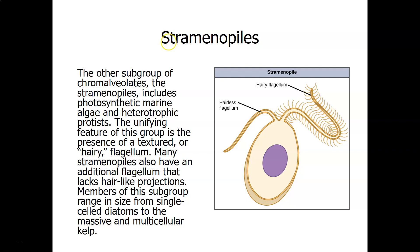Moving on to the stramenopiles: remember the chromalveolates is the supergroup we're studying, with the subgroups being the alveolates — which we just covered — and now the stramenopiles. The stramenopiles include diatoms, golden algae, and brown algae, among others. A typical stramenopile tends to have one hairless flagellum and one flagellum that has hair.